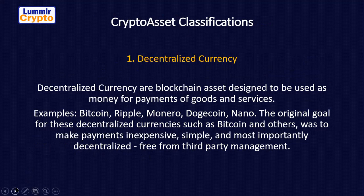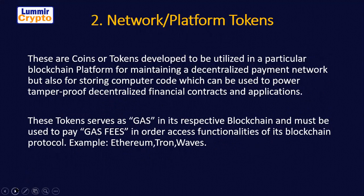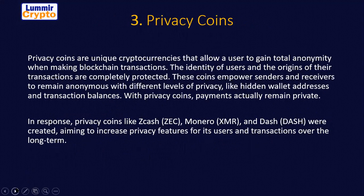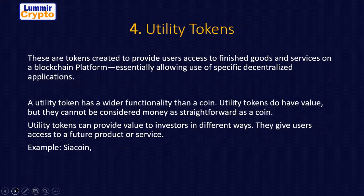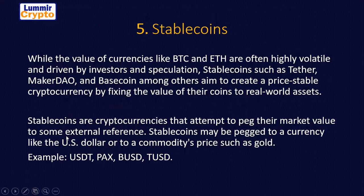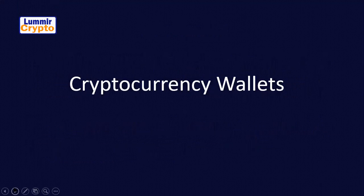So we have: decentralized currencies, network and platform tokens, privacy coins, utility tokens, and stable coins. From today, don't get confused when you hear somebody say they bought a utility token — just understand that this is a token created to serve as payment in a particular organization or firm.